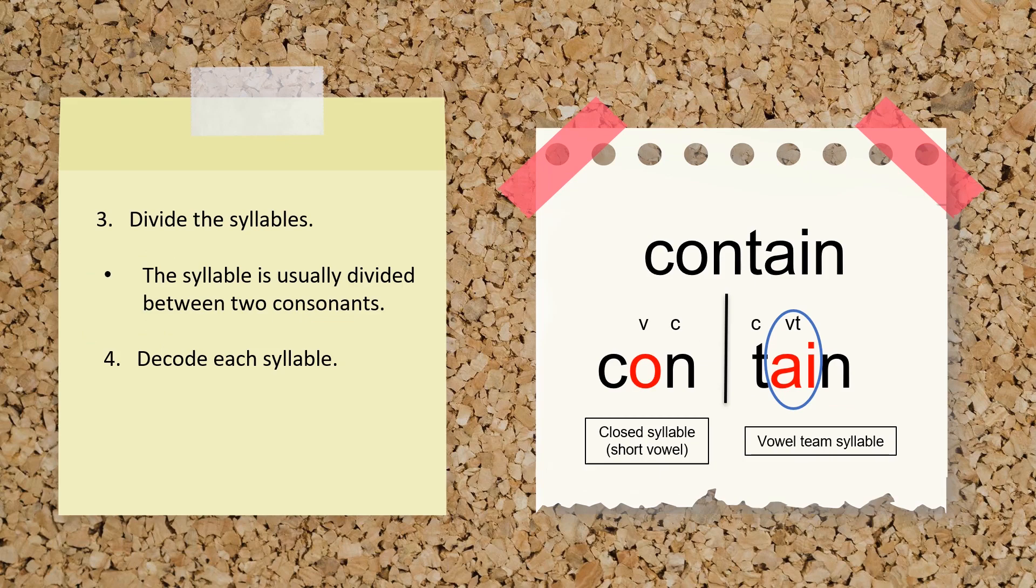Syllables are usually divided between two consonants. In this word, between the N and the T. After the syllables are divided, each syllable can now be decoded. In this example, the first syllable is closed, which usually produces the short vowel sound, con. The second syllable is a vowel team syllable, tain. Blend the syllables together to make the word contain.